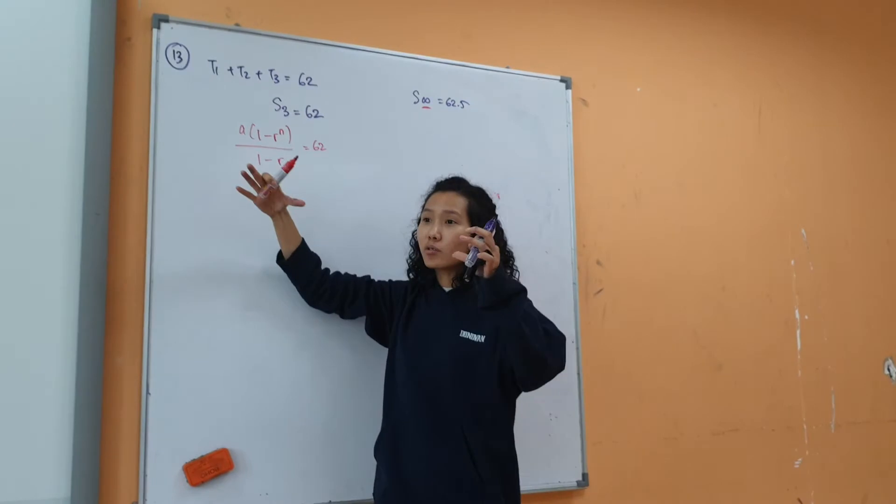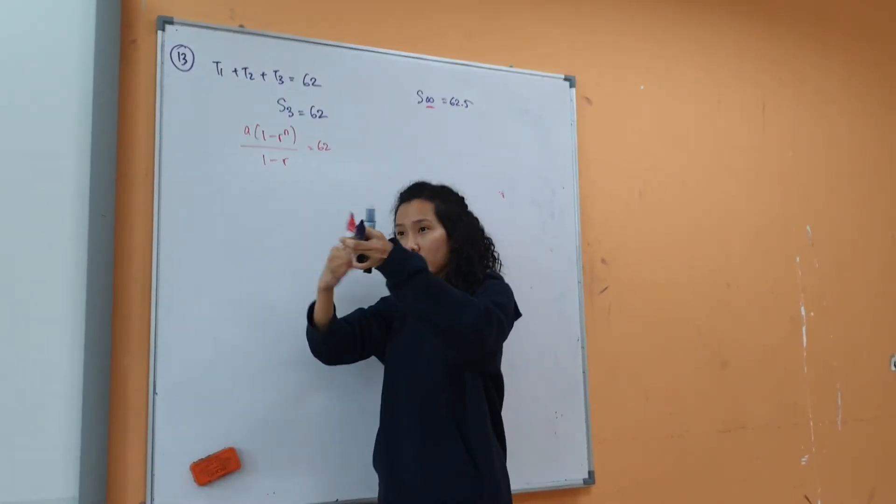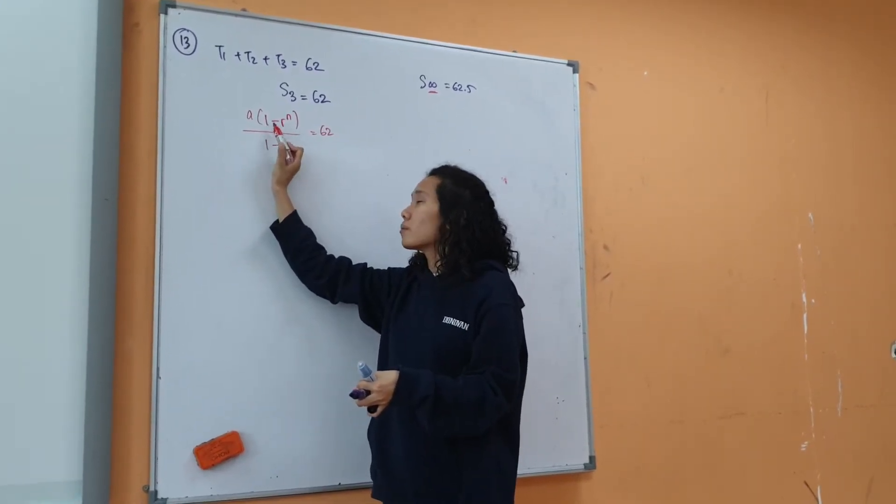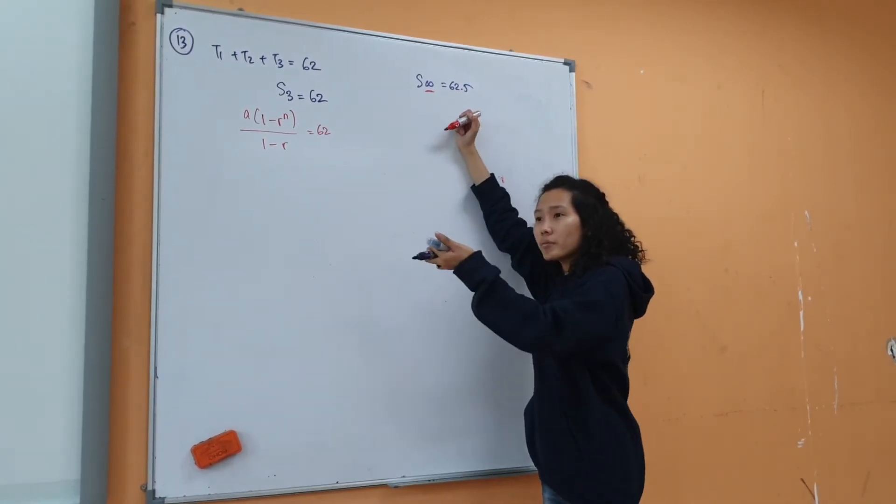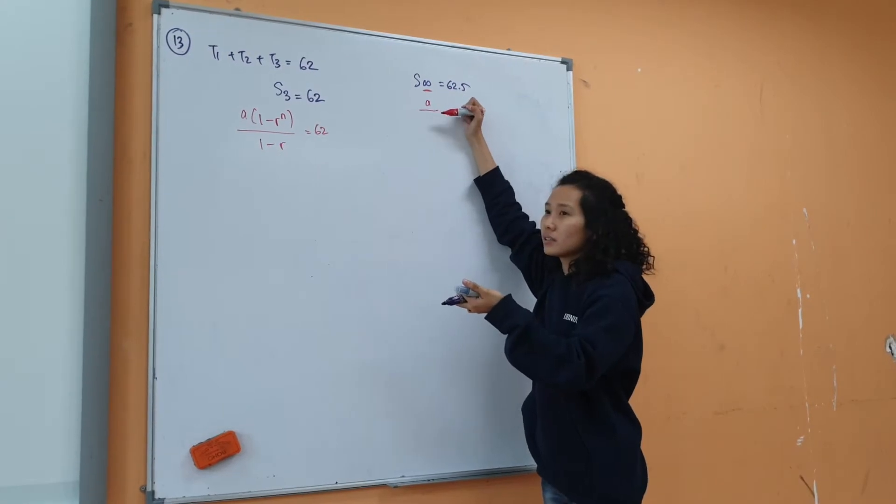Sum to infinity means your ratio is getting smaller and smaller. Like remember, leave half by half, leave half by half. That's why I use this. I know my ratio will be smaller than 1. And then sum to infinity formula, see me? A over 1 minus r.